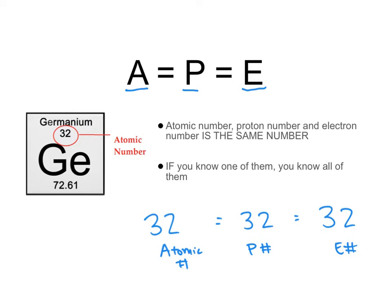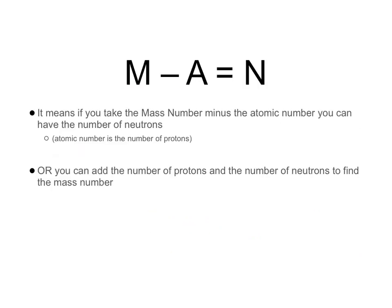Now let's focus on MAN — it's a little more difficult. MAN says that the mass number minus the atomic number gives you the number of neutrons. What this really means is: if you have a total mass and subtract the number of protons, whatever is left is the number of neutrons, because only protons and neutrons have mass in an atom. The number of neutrons is not shown directly on the periodic table square.